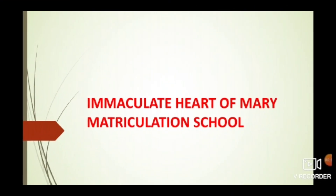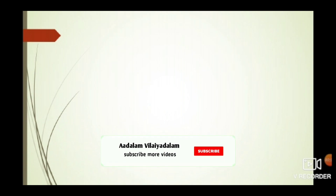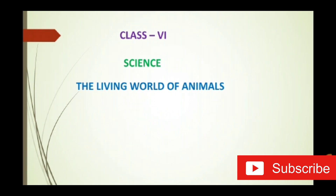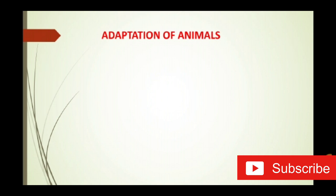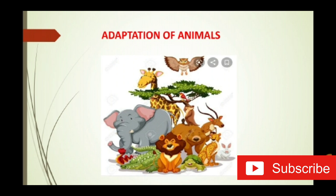Good morning students, welcome back to 6th Standard Science class. Let us start with the continuation of this lesson, 'The Living World of Animals', Unit 5. Last week I explained about habitat of animals, biodiversity, and the difference between unicellular and multicellular organisms. Today we learn about adaptations in animals.